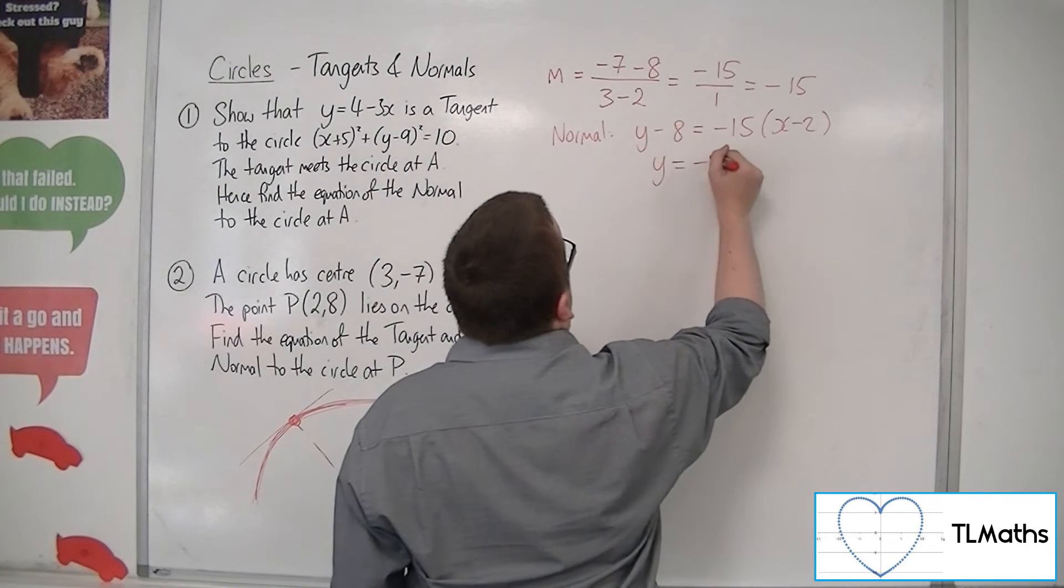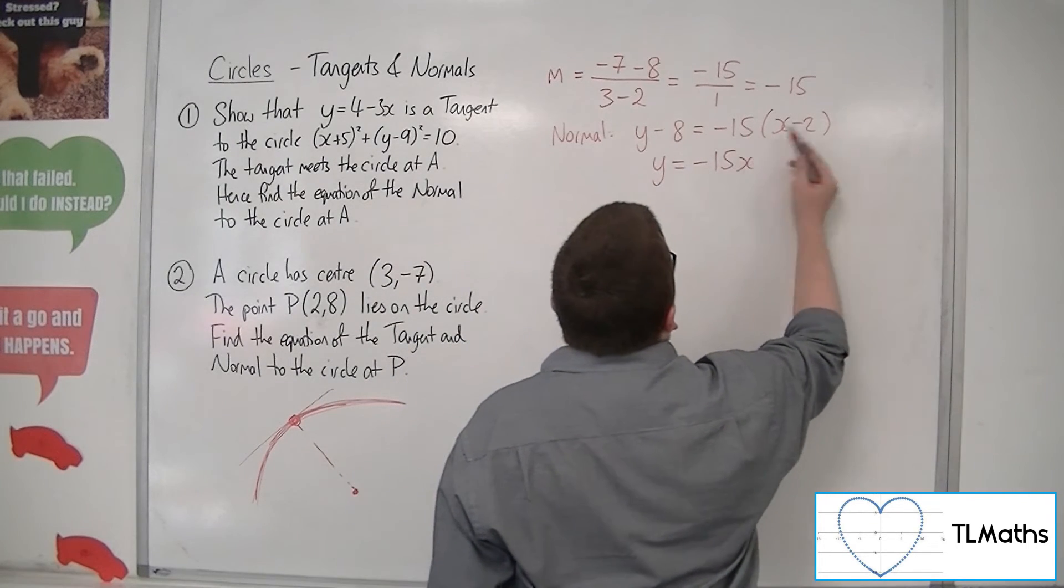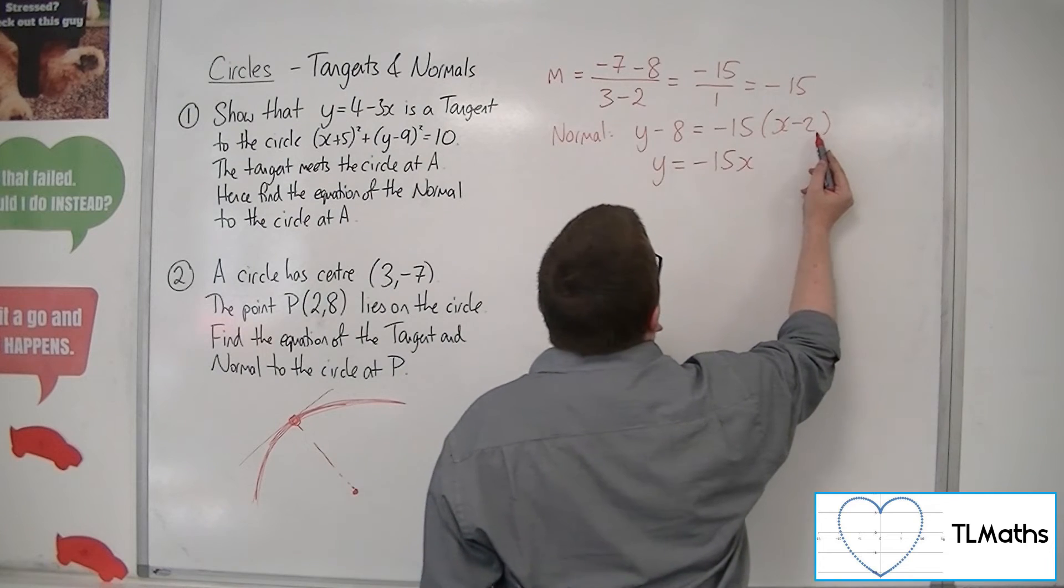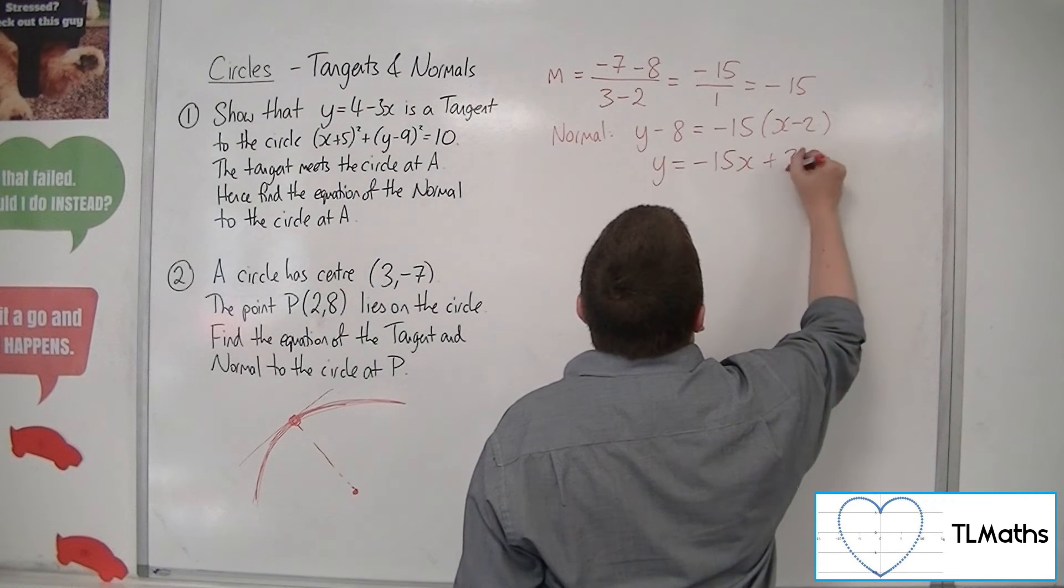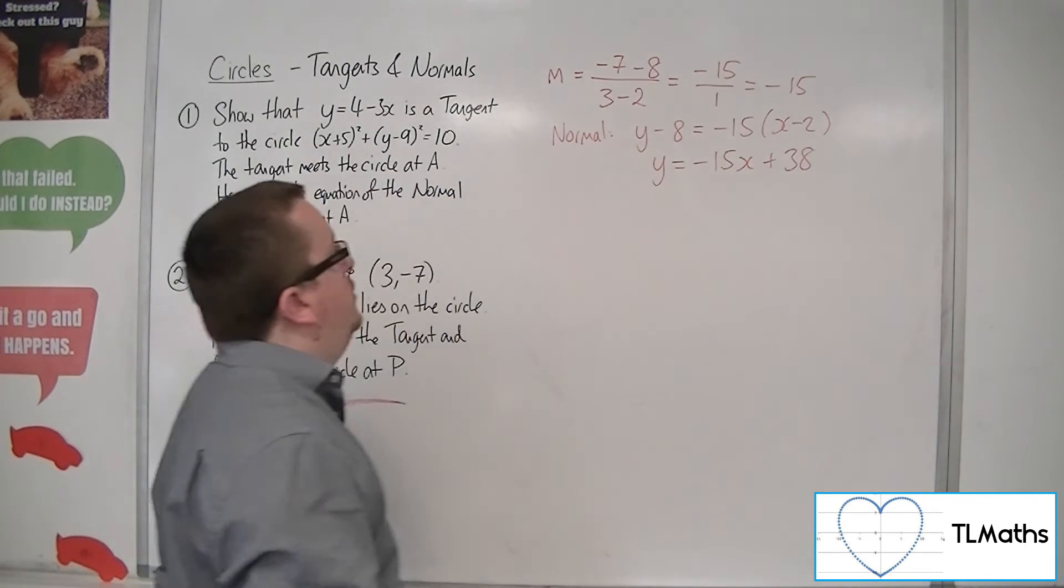So, y equals minus 15x, minus 15 times minus 2 is 30, so add the 8, so 38. So, that's the equation of the normal.